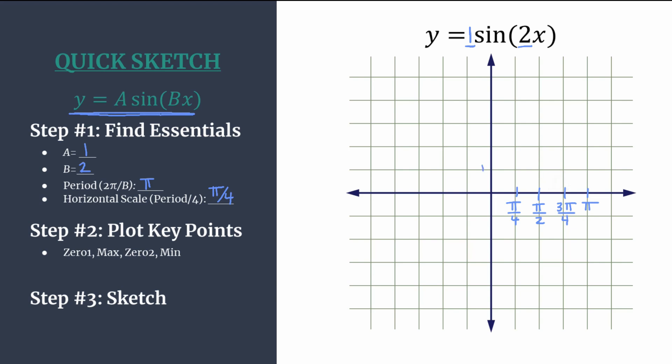For the vertical axis, you can just label by 1. We're just going to label 1 and negative 1 here because we know A will be our y coordinate for our max and our min. So we've done all the essential analysis. We're ready for step 2.